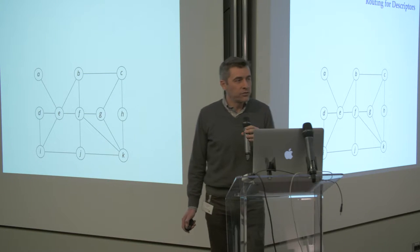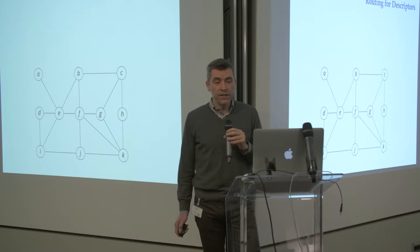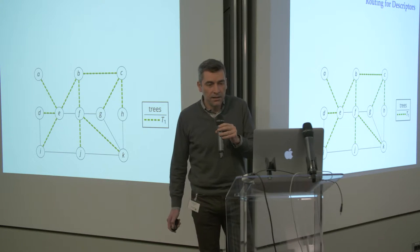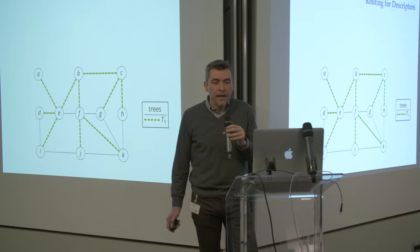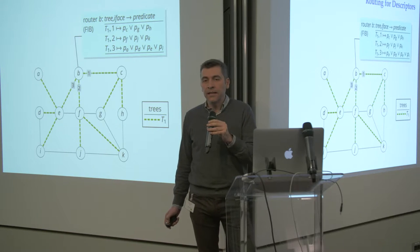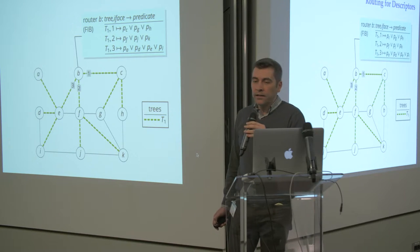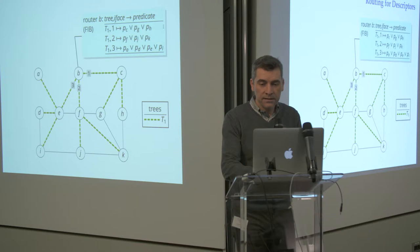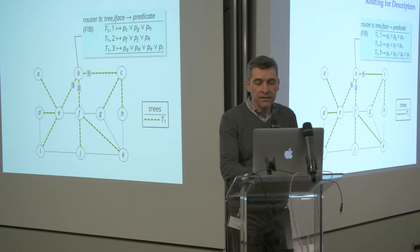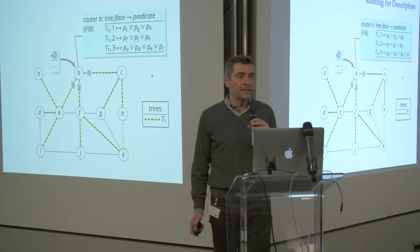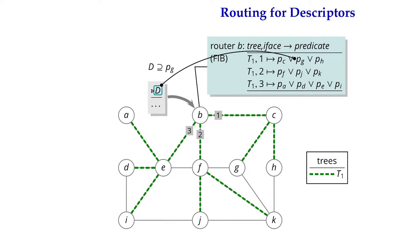Here's how routing by descriptor on trees works. First, you cover the network with a spanning tree, denoted by the dashed lines. At every node, the FIBs annotate the edges of that tree with predicates — sets of descriptors. For example, the entry for tree T1, interface 1 represents the union of all predicates reachable through that interface. If a packet comes along with descriptor D that matches — by the subset semantics — the predicate P_G, it is forwarded down that interface.